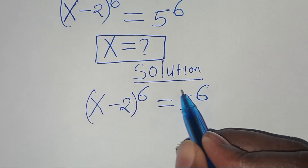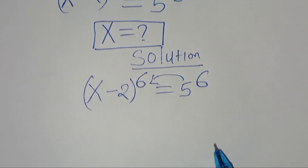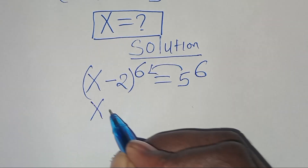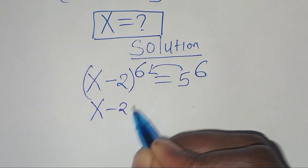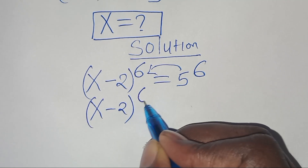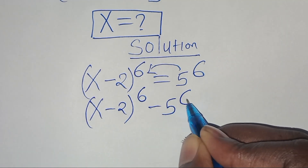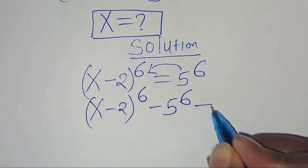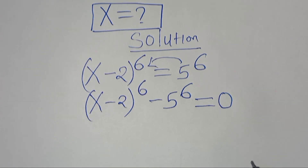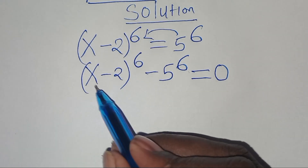Let's take 5 to the power of 6 to the left-hand side, so that we have (x minus 2) to the power of 6 minus 5 to the power of 6, equal to 0.